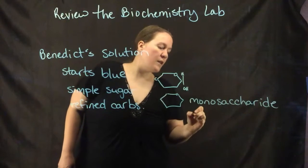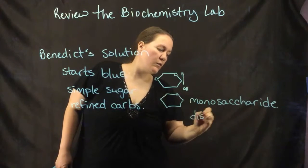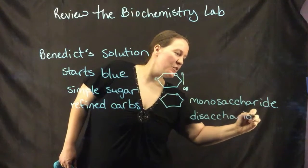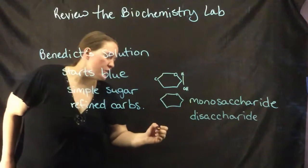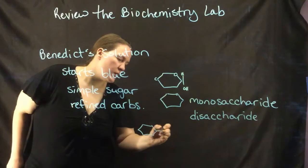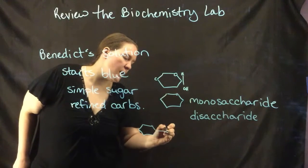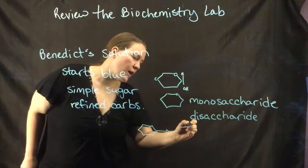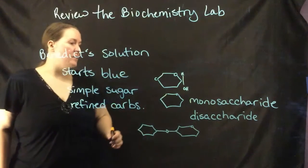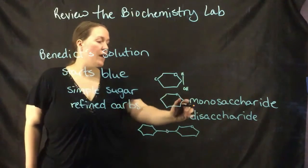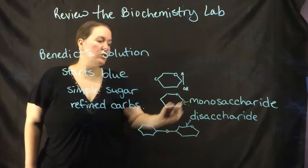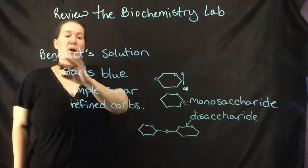A disaccharide would be two of these linked together, so you'll have two rings stuck together. There's actually an oxygen usually in the middle of that. Two of those linked together becomes a disaccharide. Both monosaccharides and disaccharides are going to be considered simple sugars.